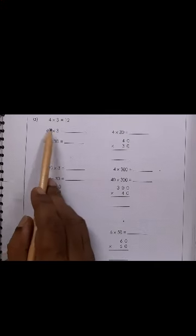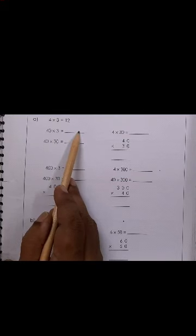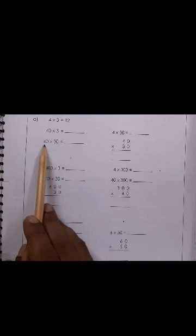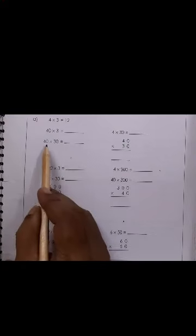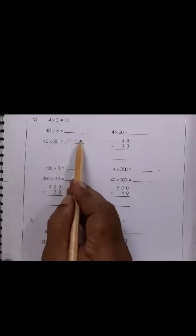Here, first you multiply 4 into 3, that will be 12. So here it is 10, so you will put 10. Now here 4 and 3. So first what you will do, multiply 4 and 3, that will be 12, and then you put your 2 zeros.